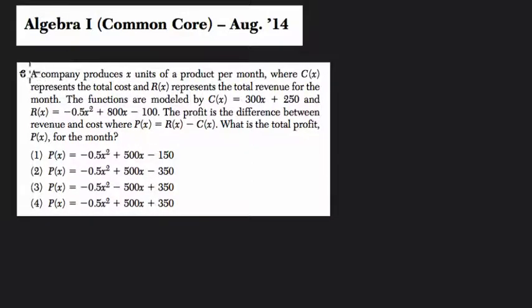Let's start by reading this problem. A company produces x units. That's our way of saying some number of units. And x is going to represent the units that we produce per month. So x is a variable and they're defining it right here as units of a product per month. You might even write that down: x equals units per month.